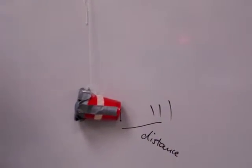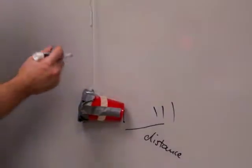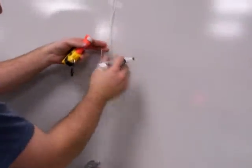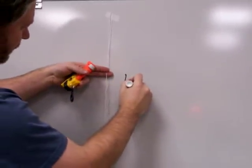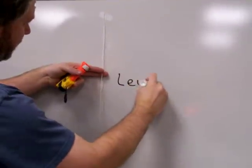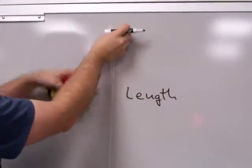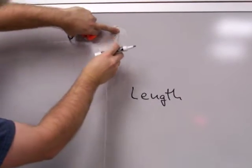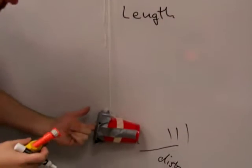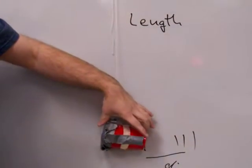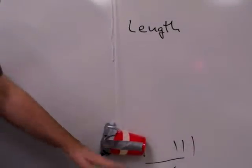What else you have to measure here is the length of the pendulum. So length of the pendulum, which is from the pivot point here, in my case the bottom of the tape, to the middle of the cup. This makes sense because the cup swings at its center of mass, not at the bottom or the top, but the middle of the cup.